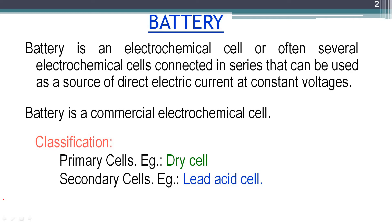A battery is an electrochemical cell, or often several electrochemical cells connected in series, that can be used as a source of direct electric current at constant voltage. Either a single galvanic cell or a group of galvanic cells connected in series can be used as a portable source of electricity. The electricity is stored in the form of chemical energy, so all the reactants are chemicals already sealed inside the battery.